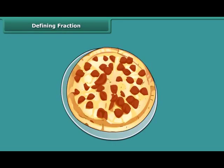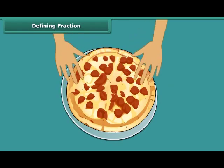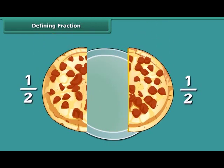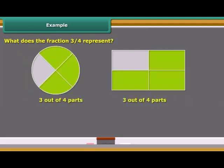Fraction indicates part of a whole thing. 1 upon 2 means that one whole thing is divided into two equal parts, and one part out of these two parts is taken. For example, Ravi divides a pizza into two parts. What does the fraction 3 upon 4 represent? It represents three out of four parts. The shaded part of each figure below represents 3 upon 4 of the entire figure.